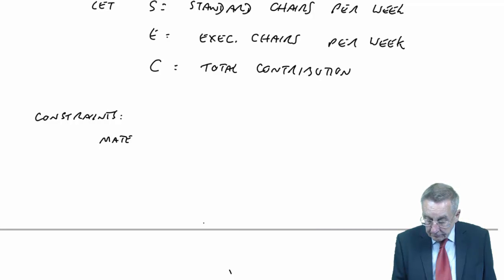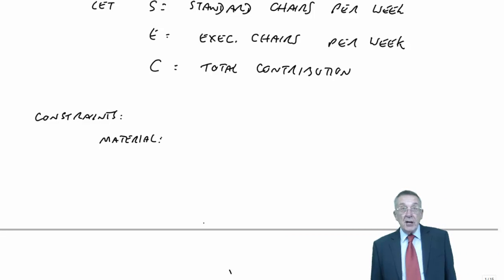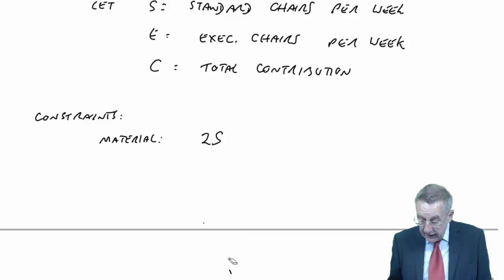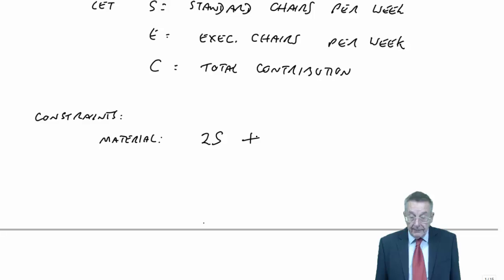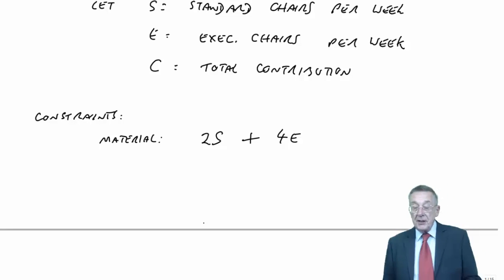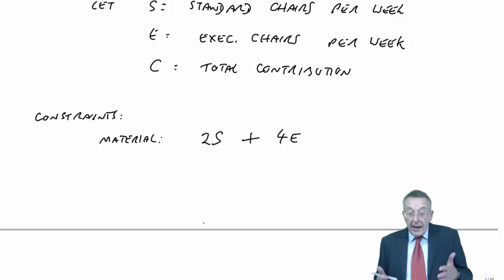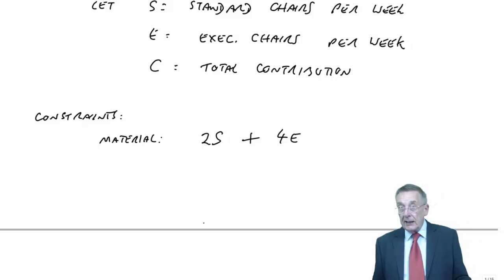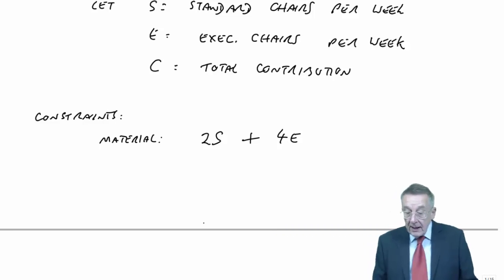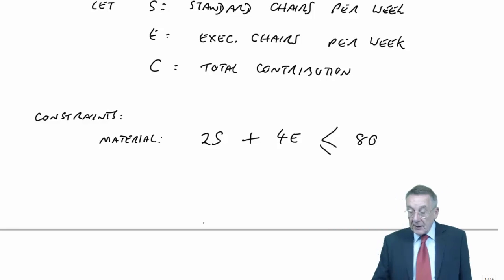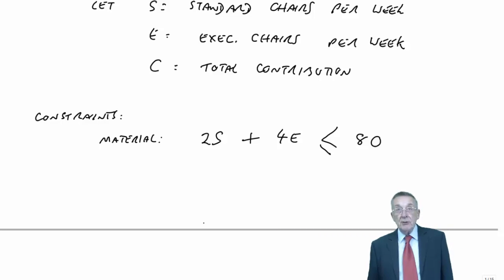First of all, material. I'm producing S standard chairs and E executive chairs. Each standard chair needs two kilos, so we'll need two S kilos. Each executive takes four kilos, so four E for those. In total, two S plus four E is how much material we'll use. But whatever total we end up with, it must be less than or equal to 80. So: 2S + 4E ≤ 80.